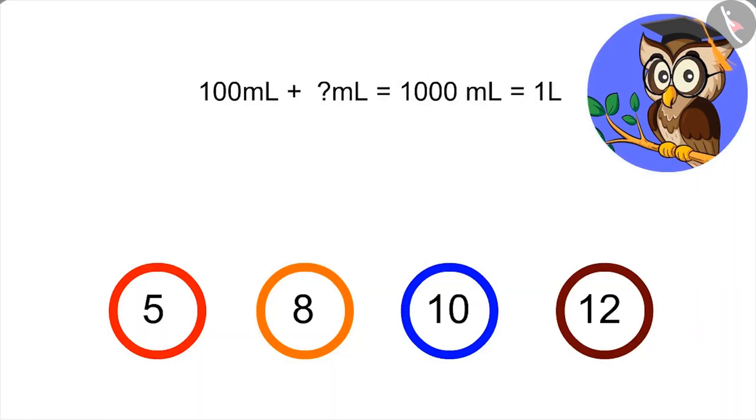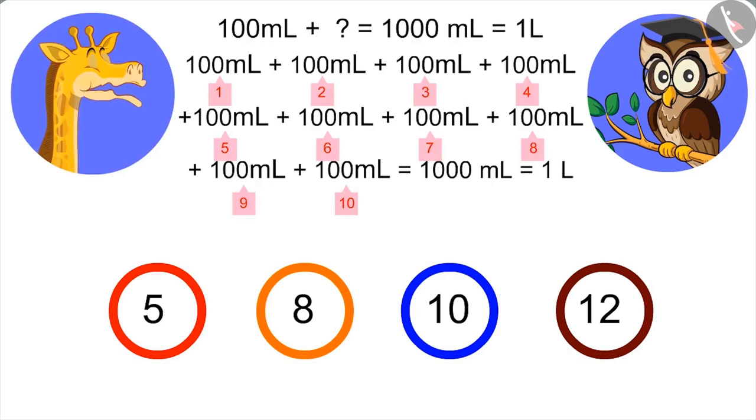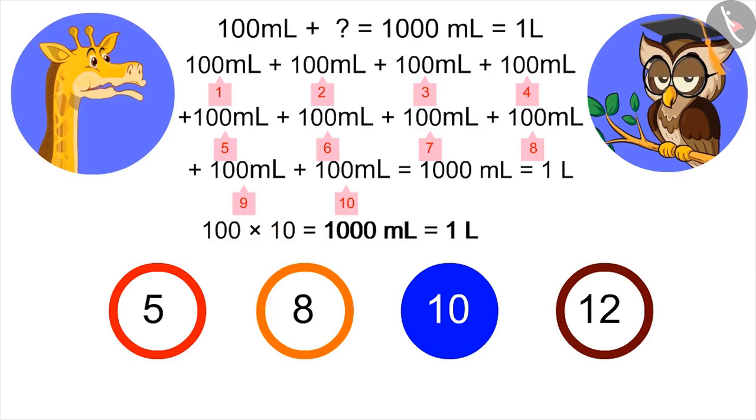Now tell, how many 100 ml will add up to 1 liter? Adding 100 ml up to 10 times makes 1,000 ml, means 10 multiplied by 100 ml gives 1 liter.